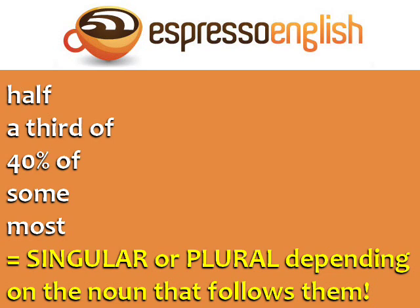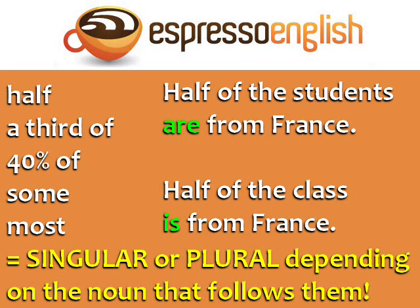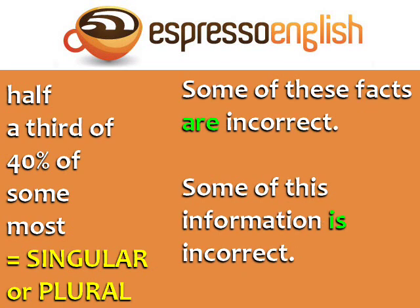Here's the tricky part. Half, a third of, 40% of, some, and most can be singular or plural depending on the noun that follows them. 'Half of the students are from France' — we use the plural verb 'are' because 'students' is plural. 'Half of the class is from France' — we use the singular verb 'is' because 'class' is singular. 'Some of these facts are incorrect' — 'facts' is plural, so we use 'are.' 'Some of this information is incorrect' — 'information' is uncountable, so it's always singular, and we use 'is.'